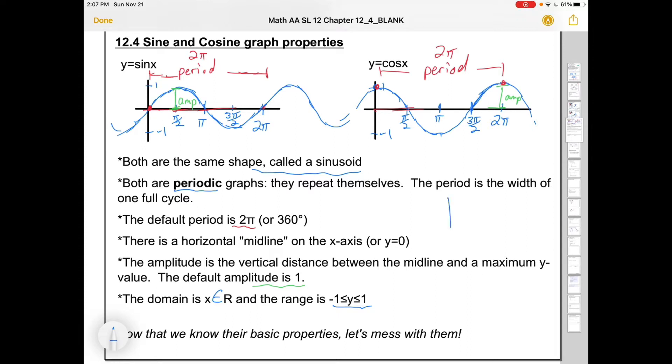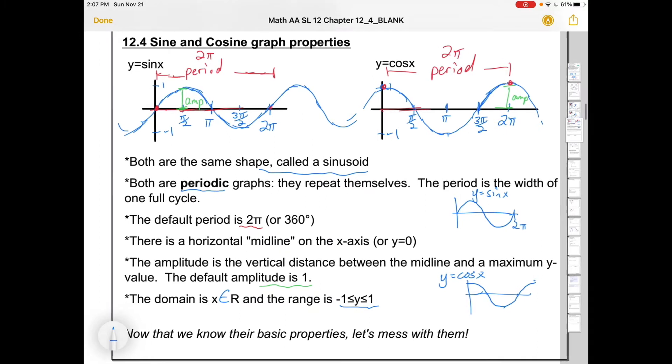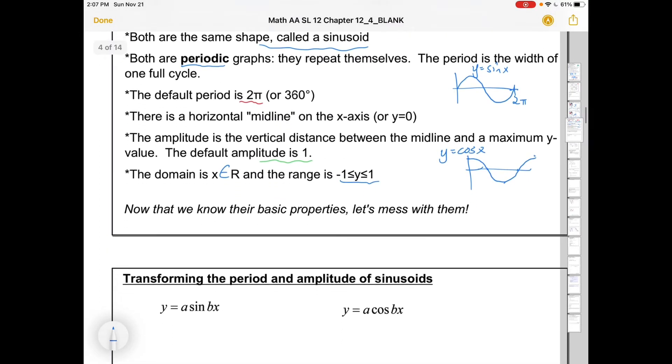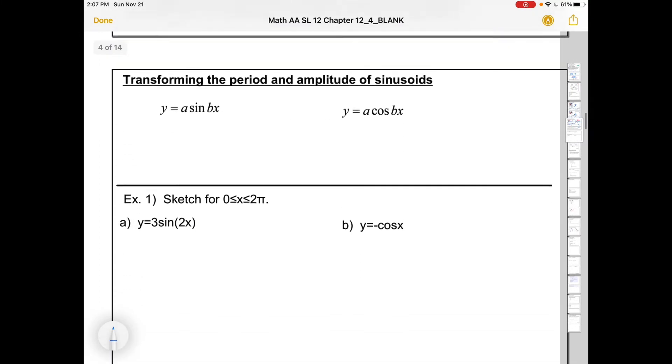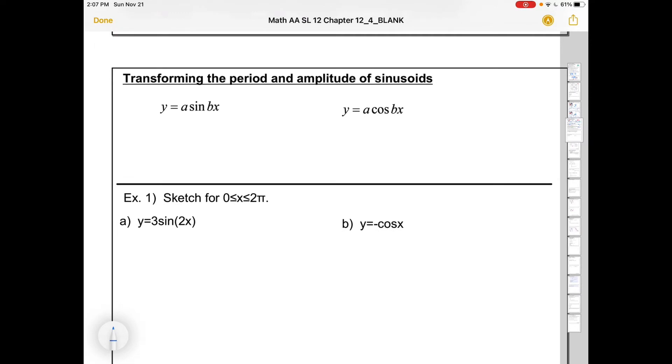Here's what I would be placing in my mind palace. That this is the basic look of sine x, an untransformed sine x. And this is the basic look of an untransformed cos x. I need to know what the parent functions look like before I start to transform them. Now that we know their basic properties, let's mess with them, transforming the period and amplitude of sinusoids.